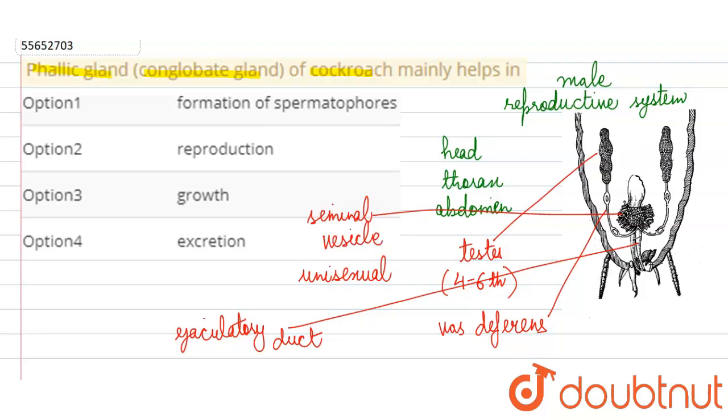Now the phallic gland, which we have been asked about, is present at the seminal vesicles. So this is the structure—the cockroach's phallic gland or conglomerate gland.